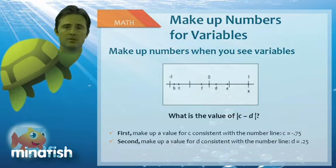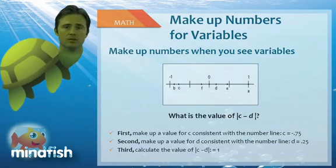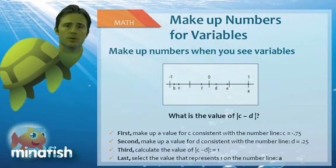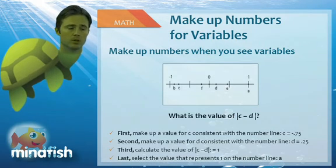So when I do the absolute value of C minus D, I get the absolute value of negative 1, or 1. Now all I have to do is determine what value of my number line corresponds to the number 1, and the closest answer is A, for choice A.